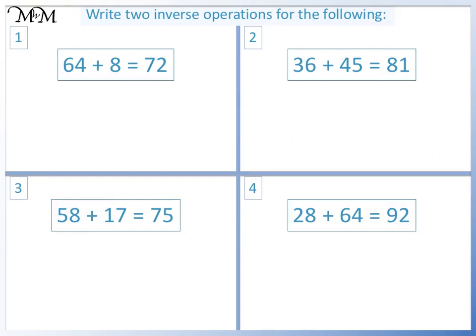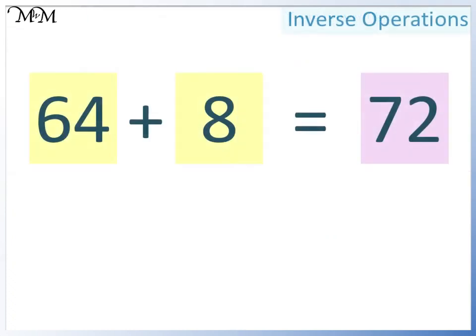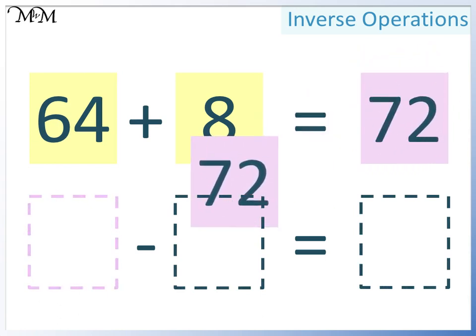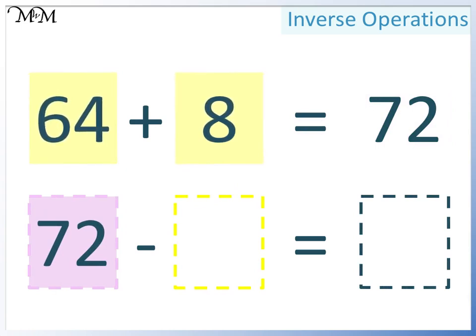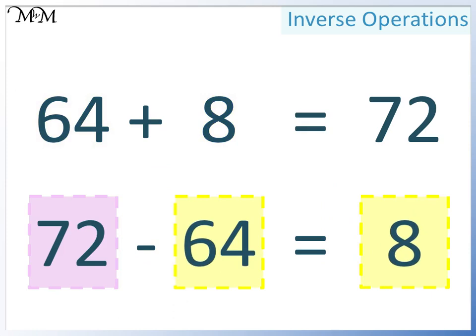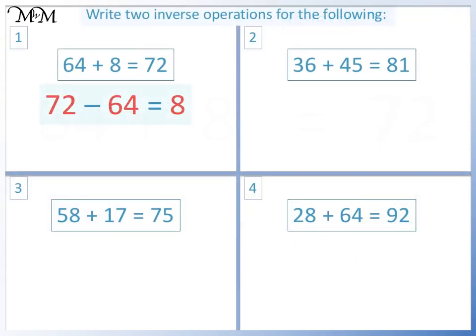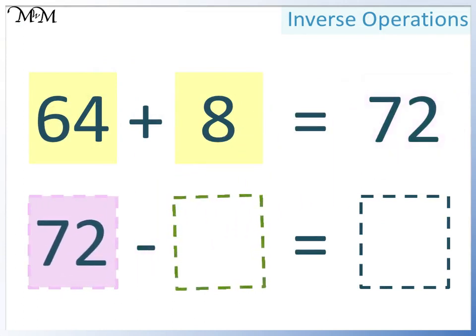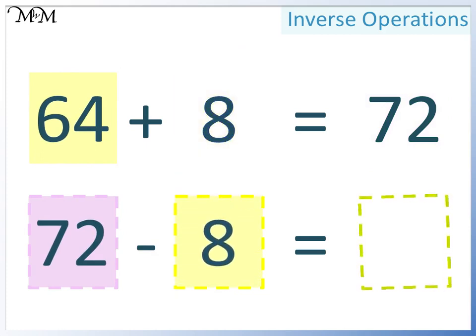Here are some questions for you to try. Write two inverse operations for the following. Pause the video and have a go. Question 1: 64 plus 8 equals 72. The largest number must go at the start — this is 72. In the next space we can have either of the two smaller numbers. This time we'll have 64, and in the final space we'll have 8. 72 take away 64 equals 8. The second way is to again have 72 at the start, but this time have 8 in the next space. In the final space we must have 64. 72 take away 8 equals 64.